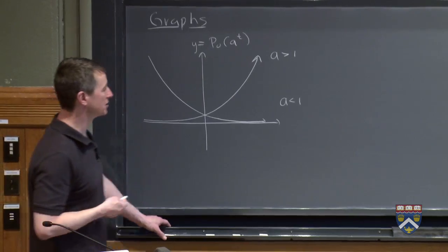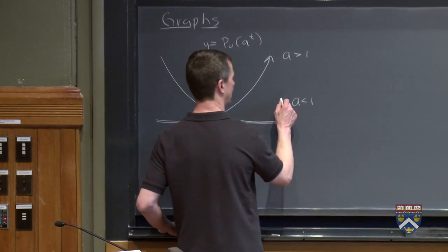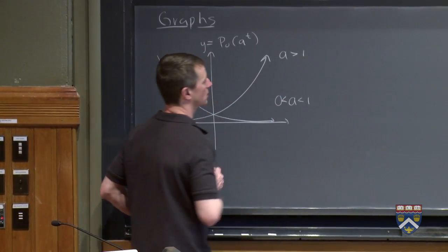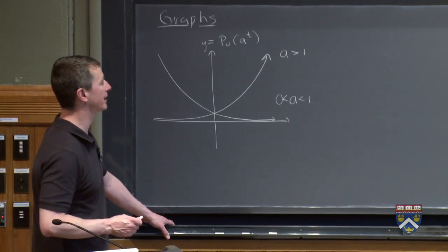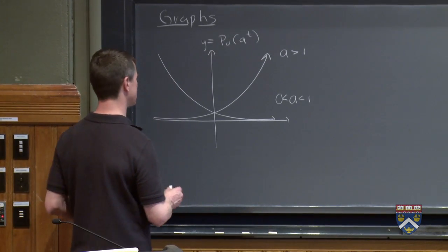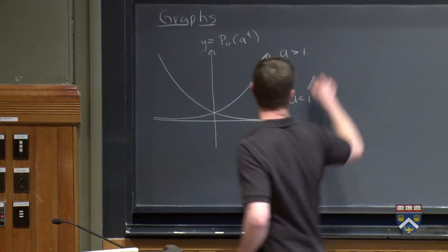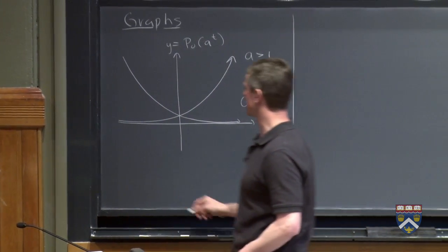But you'll notice that there are certain values of a that we didn't allow. And those are the values of a where, I mean, a equals 0 wouldn't be very exciting. But if a were negative, some bad things happen. So just to see if we can understand why that is.